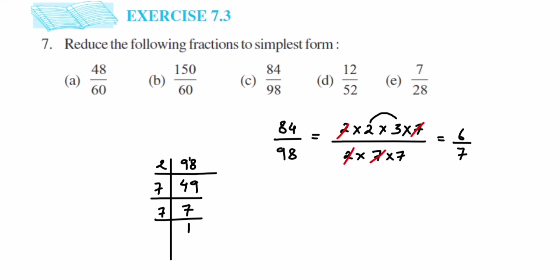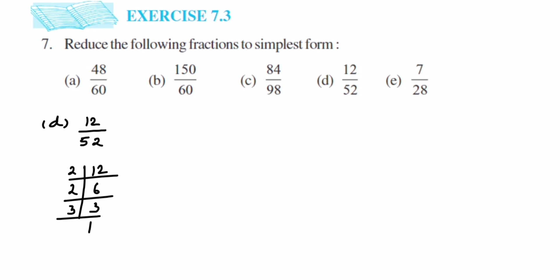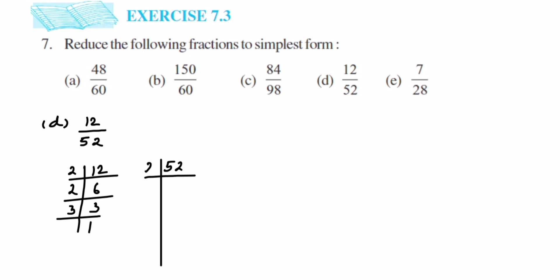Moving on to the fourth problem: 12/52. Both numbers are even, so we can cancel in the 2 table or 4 table, or just do the prime factorization. For 12: 2 × 2 × 3 = 12. For 52, starting with 2: 2 × 26 = 52, then 26 goes in the 2 table: 2 × 13 = 26, and 13 is a prime number, so 13 × 1 = 13.